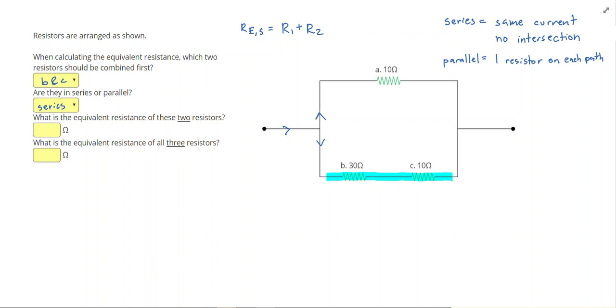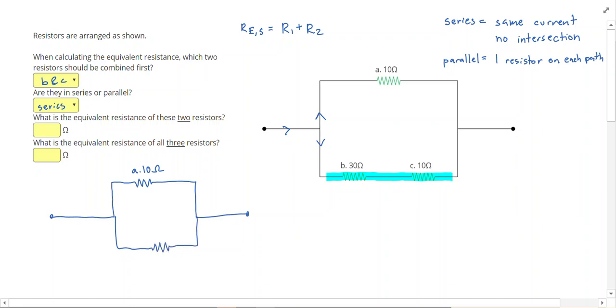I'm going to replace what I highlighted in blue with just one wire with one resistor on it. I still have resistor A up here, and resistor A is still 10 ohms. But now, I have a resistor right here. I'm combining those B and C into one. I'm going to call that resistor BC. And to get resistor BC, I did 30 ohms plus 10 ohms using my series equation, and that gave me 40 ohms for BC.